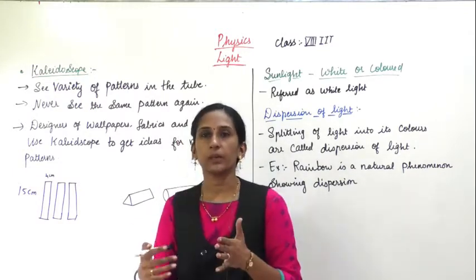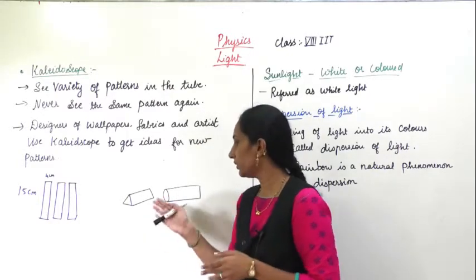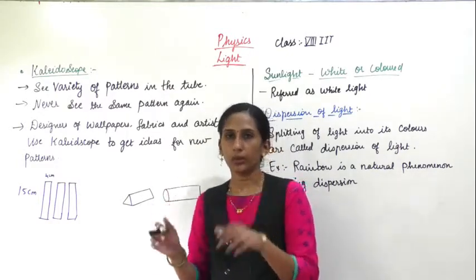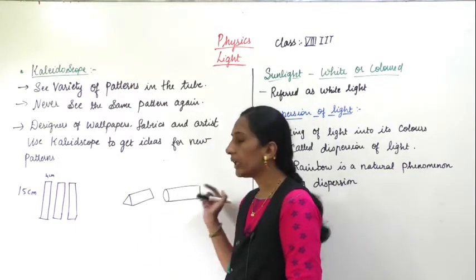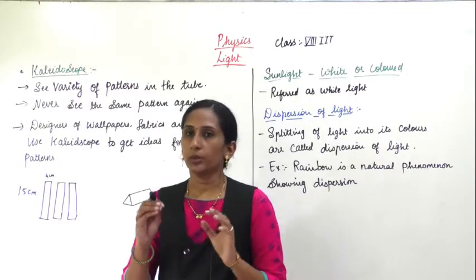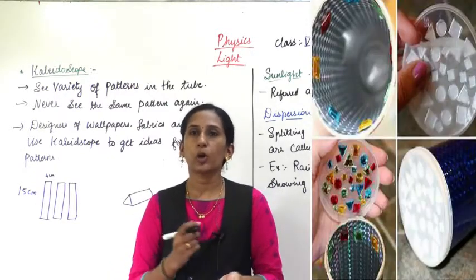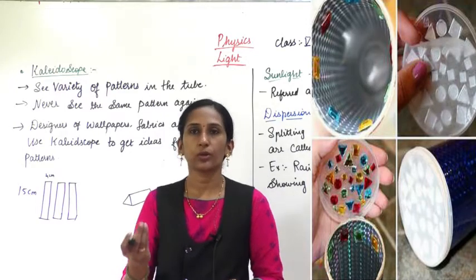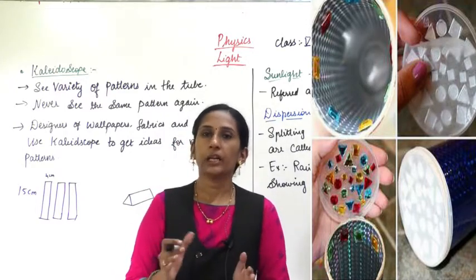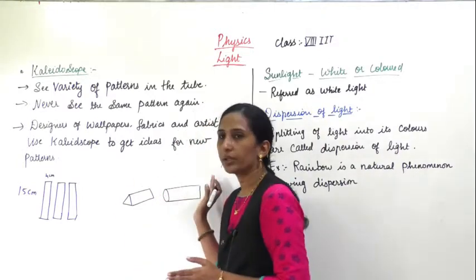You will also stick a transparent paper on the side of the circular cardboard piece. On the other side you will put small pieces of colorful bangles or colorful particles. After that you have to close the other side with a ground glass plate.